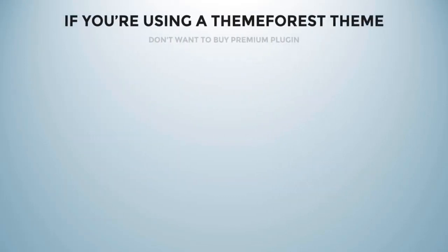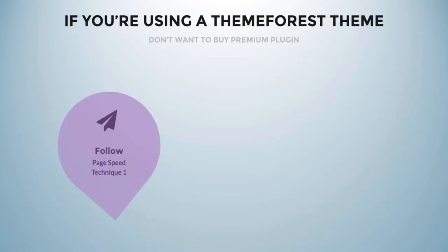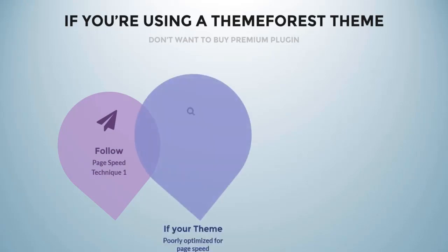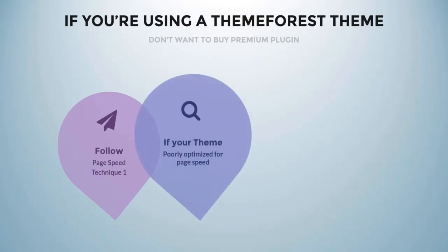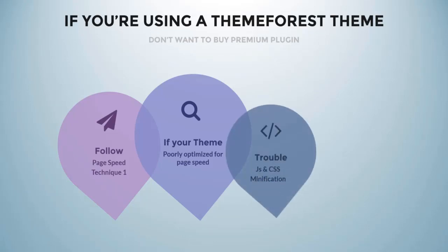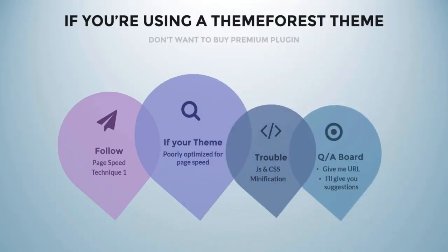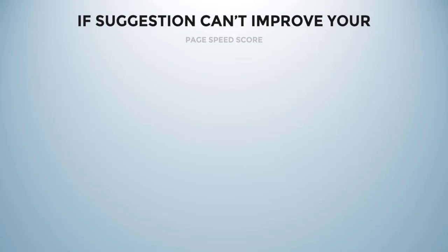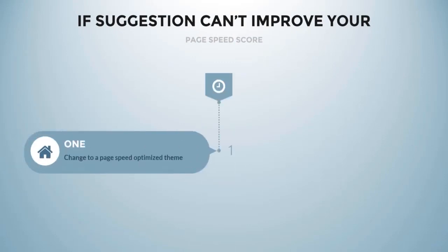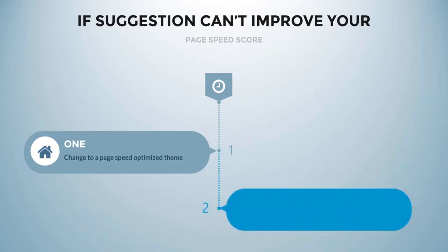If you are using a premium theme from ThemeForest and don't want to buy the premium plugin, you can follow Technique 1. But if your theme is poorly optimized, you might find trouble with JS and CSS minification. In that case, raise a question in the Q&A board with your website URL and I'll give suggestions. If those suggestions can't improve your score, you are left with two options: change to a page speed optimized theme, or follow Technique 2 — which means buying that premium plugin for your poorly coded theme.